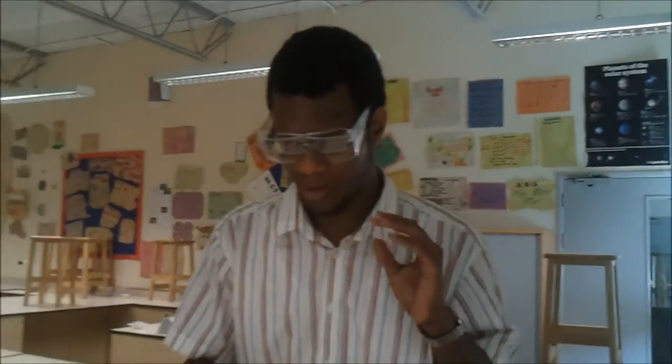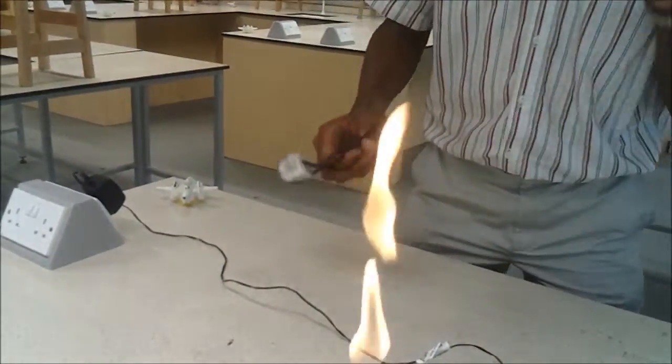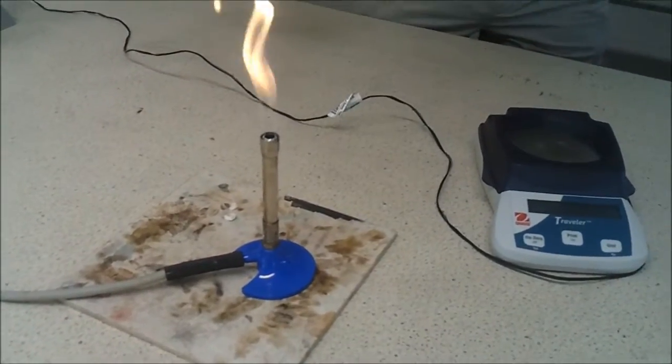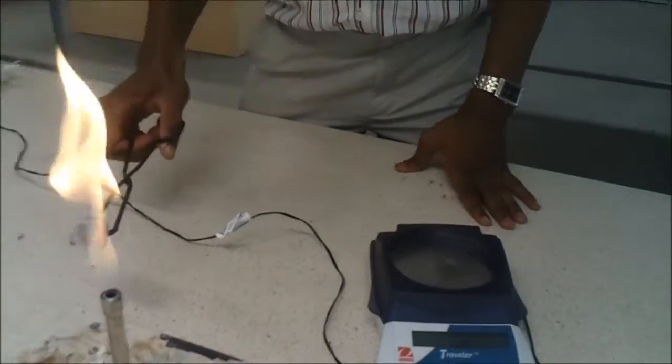So first of all, I've got my limestone here, tongs, heat proof mats, Bunsen burner on the safety flame, and scales. That's all I need.